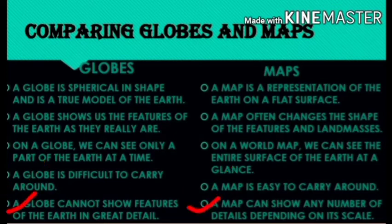The last difference is a globe cannot show the features of the earth in great detail, but a map can show any number of details depending on its scale, giving a clear picture of the earth in detail.